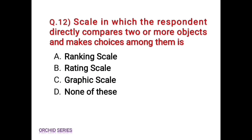Question number 12: the scale in which the respondent directly compares two or more objects and makes choices among them is — Option A, ranking scale. Option B, rating scale. Option C, graphic scale. Option D, none of these.